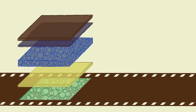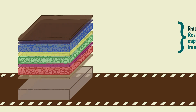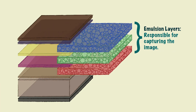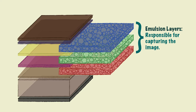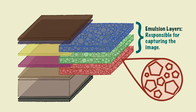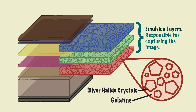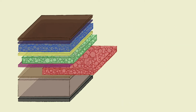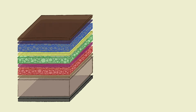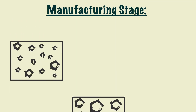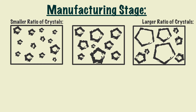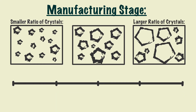Camera film is made up of layers. The emulsion layers are responsible for capturing the image, made up of silver halide crystals suspended in gelatine. Silver halide is sensitive to light, which is how images are formed. During the manufacturing stage, different size crystals are used to create a variety of film sensitivities.